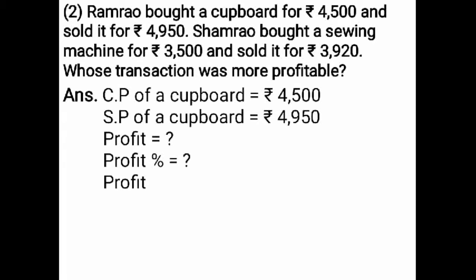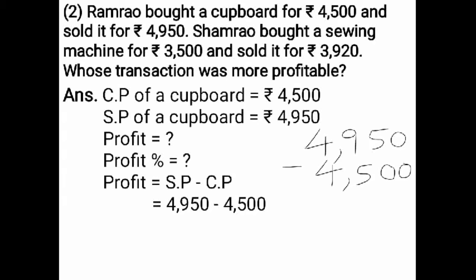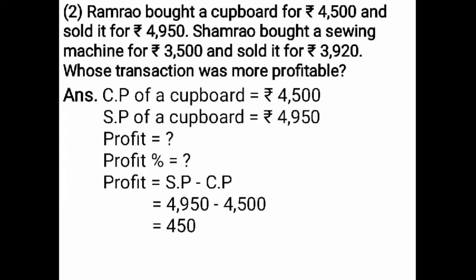The formula for profit is selling price minus cost price. Selling price is Rs. 4,950 minus cost price Rs. 4,500. Subtracting from the units place: 0 minus 0 is 0, 5 minus 0 is 5, 9 minus 5 is 4. The answer is Rs. 450. Therefore, profit is equal to Rs. 450.